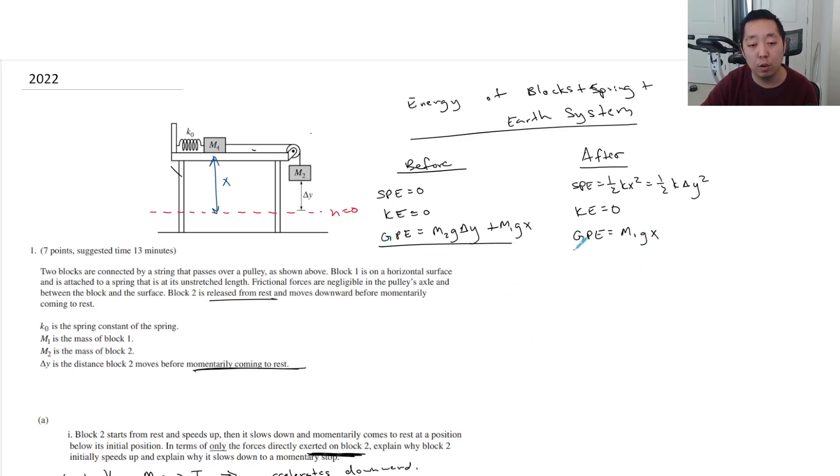So we're going to say the total energies are the same between the two because there's no work happening. So I would say M2G delta Y plus M1GX. You don't need this M1GX, by the way. I'm just using that to illustrate to you guys. It's K0. I should put K0 here. Delta Y squared plus M1GX. That these guys are just going to cancel.